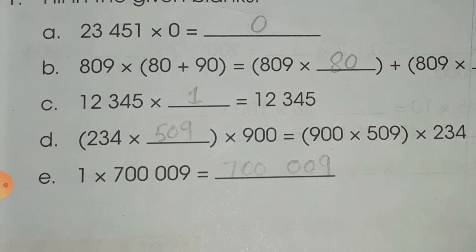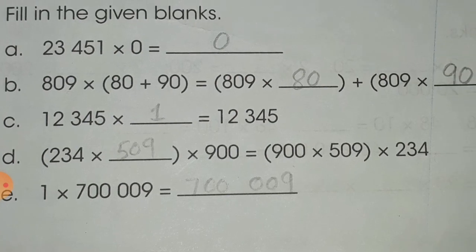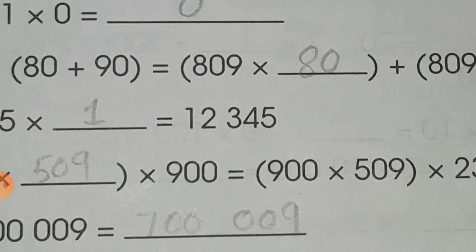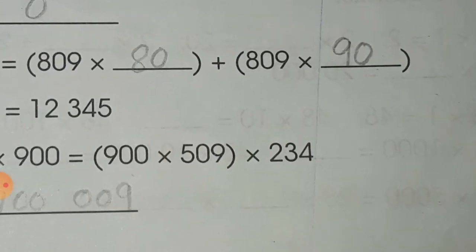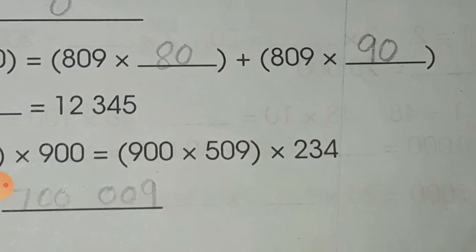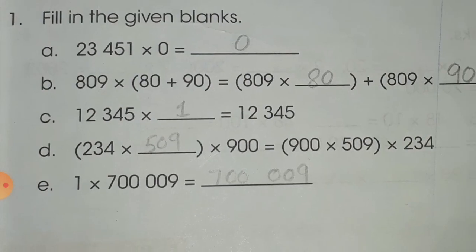In part C, the product is the number itself. In part D, 3 numbers are given: 244 and 900 are written, but 509 was missing, so we write 509 in the blank. In part E, 1 is multiplying by a number, so the product will be the number itself.